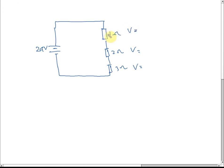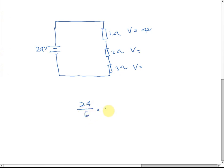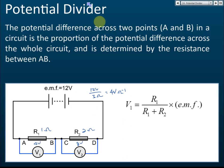The total resistance is 6 ohms, so 24 volts shared by 6 ohms gives 4 volts per ohm. Therefore, the 1-ohm resistor gets 4 volts, the 2-ohm resistor gets 8 volts, and the 3-ohm resistor gets 12 volts. All together they sum to 24 volts. These three resistors share the 24 volts according to the magnitude of their resistance — higher resistance gets higher voltage, lower resistance gets lower voltage. This is called a potential divider.